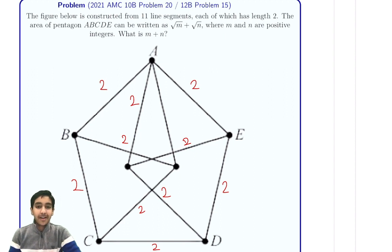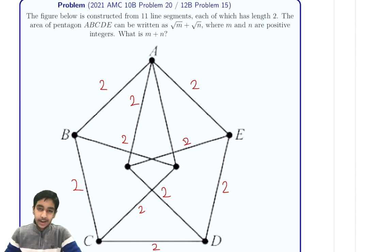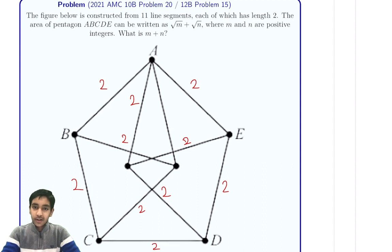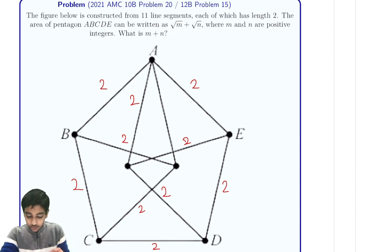So, how might we go about this problem? What tools do we know when looking at area? We know various formulas — the standard ½ base times height, ½ab sinC, Heron's formula. But most of them are for triangles. Most of our area formulas only work for triangles and not for larger shapes. So, is there any way we can relate this large pentagon shape to areas we can easily work with?